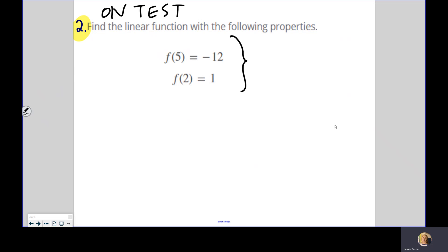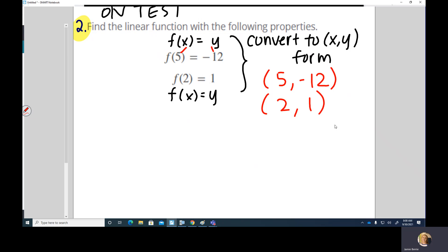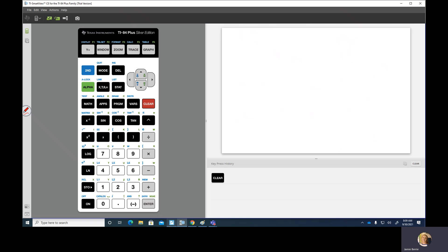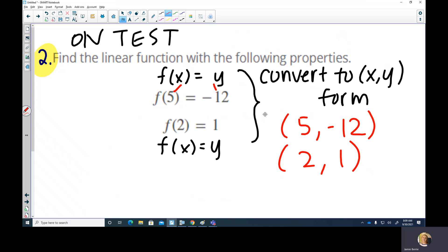Let's look at the one we did on the calculator yesterday. This will be number two. For this one, you will have just any random combination of numbers here on your homework, so it will be something different, but the steps will be the same. Find the linear function with the following properties: f(5) = -12 and f(2) = 1. This one is the one that I would put on the test.